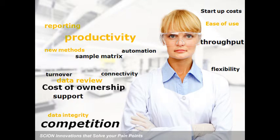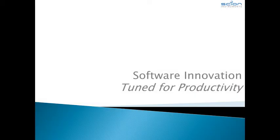The hardware innovations we just covered will reduce many of the pain points in your lab, but hardware is only part of the solution. You need innovation in software as well to make those critical gains in performance and confidence to increase your capability and credibility. This section will show the software innovations in the Scion GC-MS system that eliminate even more of those pain points arising from method development, method maintenance, and reporting. Let's see how the Scion is tuned for productivity.